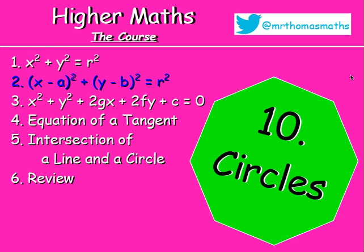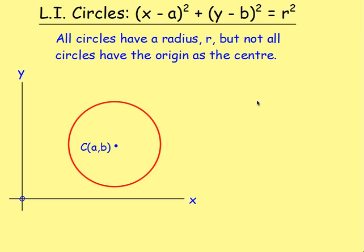Here we are with the Circles chapter. We're now on the second equation — Lesson 2 of Circles. Last lesson we were looking at circles that had the origin as the centre. This time we want to move on, because all circles have a radius, but not all circles have the origin as the centre.